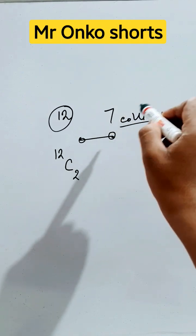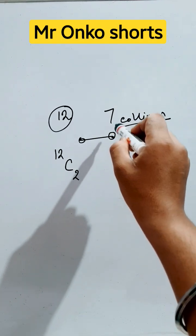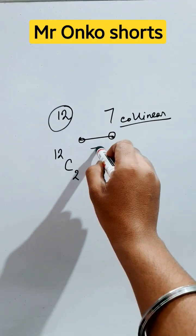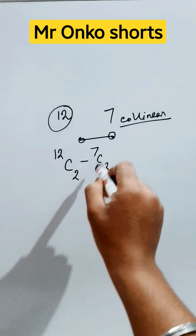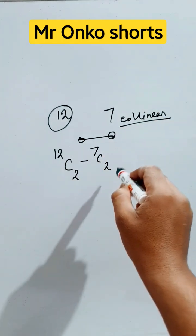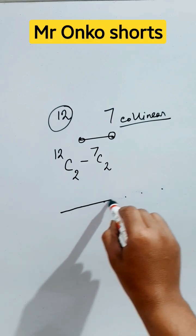Now first of all, these 7 collinear points are there. So the straight lines joining these 7 collinear points, the probable straight lines will be 7C2. Now this can't be possible because this is collinear. And these 7 lines all together makes a straight line.